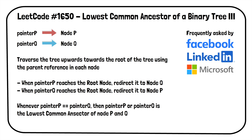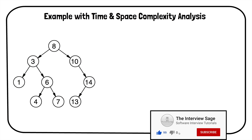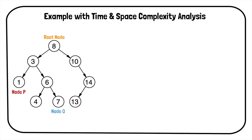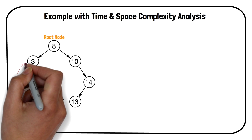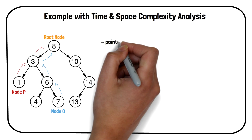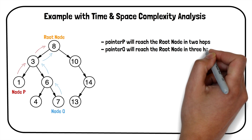Consider the following binary tree: the root node is 8, node p is 1, and node q is 7. We have to find the lowest common ancestor of node 1 and node 7. The path from node p to root is highlighted in red, and from node q to root in blue. The difference in depth of both nodes is 1. Pointer p will reach the root node in 2 hops, and pointer q will reach the root node in 3 hops.